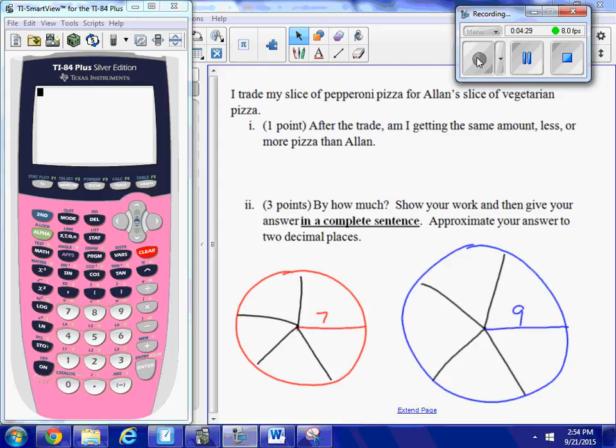Now the second part of this problem says I trade my slice of pepperoni pizza, because I'm the vegetarian, I don't eat pepperoni, for Alan's slice of vegetarian pizza. So I'm giving him a medium pepperoni slice, he's going to give me a large vegetarian slice. The first question says, after the trade, am I getting the same amount, less, or more pizza than Alan? Now in this case here, we're talking about area. We're not talking about just the crust, we're talking about the whole area of a slice of pizza.